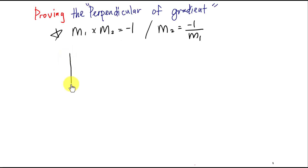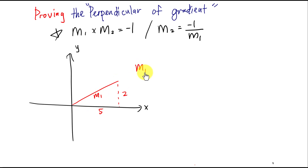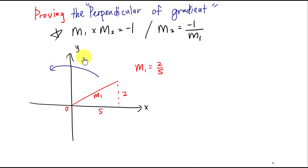The first way is quite simple but less formal. Imagine you have an x-axis and y-axis. You have a line — I'll randomly assign some numbers: let's say this is 5 and this is 2. To find the gradient for this line, which I call m1, you use rise over run, which is 2 over 5. That's your first gradient. Now if I want to find the second gradient, imagine this line rotates 90 degrees — it will go something like this.